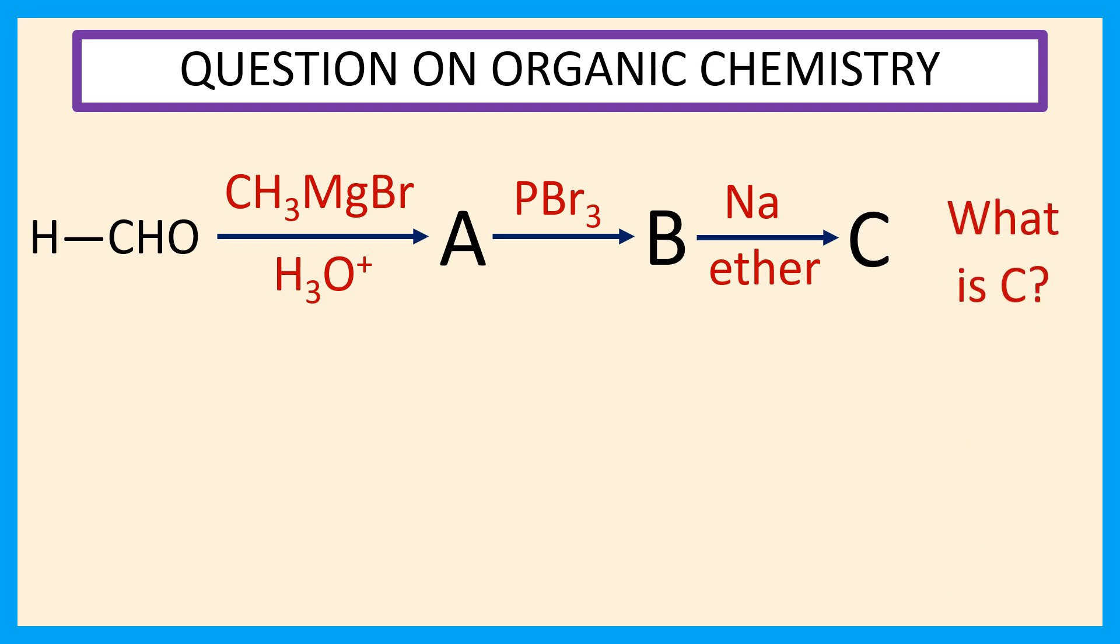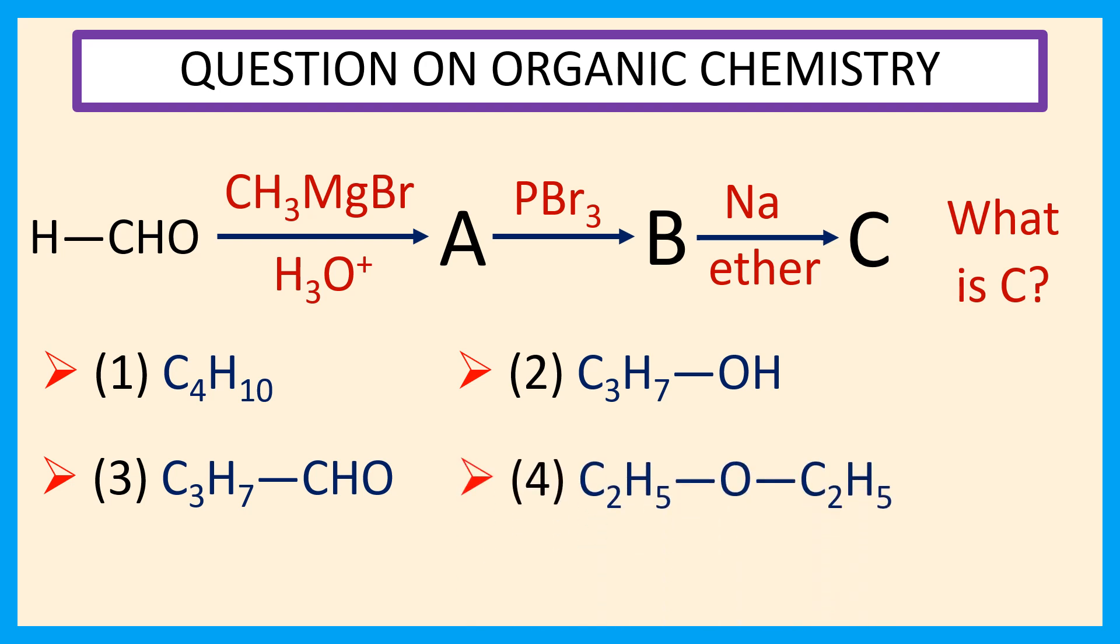Choices are 1 C4H10, 2 C3H7OH, 3 C3H7CHO, 4 C2H5O, C2H5, answer is 1 C4H10 that is N butane.